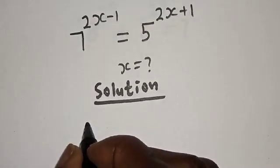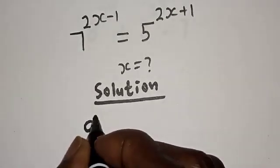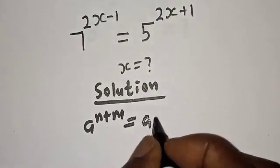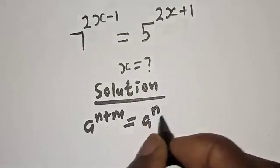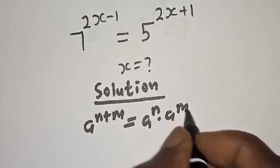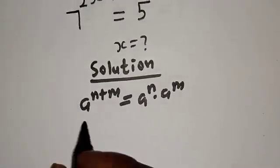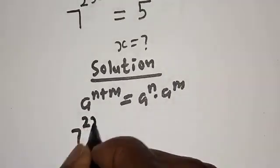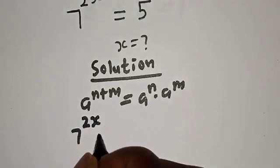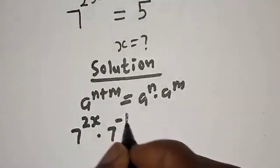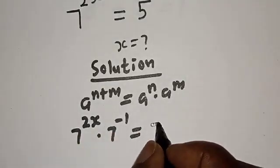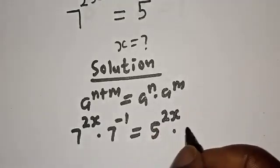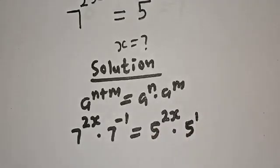Take note of this exponential rule: if you have a raised to power n plus m, this is equal to a raised to power n multiplied by a raised to power m. So we have 7 raised to power 2s multiplied by 7 raised to power minus 1, equal to 5 raised to power 2s multiplied by 5 raised to power 1.